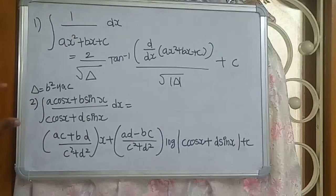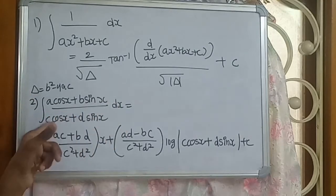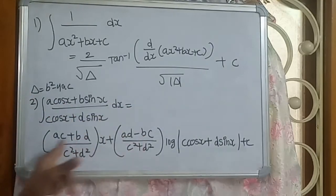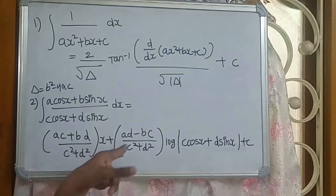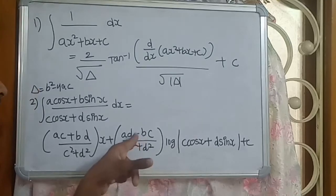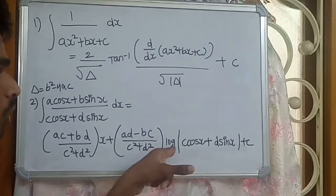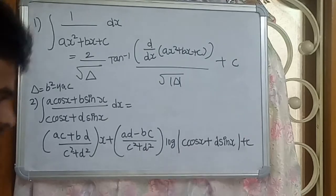Second formula repeated with correction: integration of A cos x plus B sin x by C cos x plus D sin x dx equals (AC plus BD) by (C squared plus D squared) times x, plus (AD minus BC) by (C squared plus D squared) times log of C cos x plus D sin x, plus C.